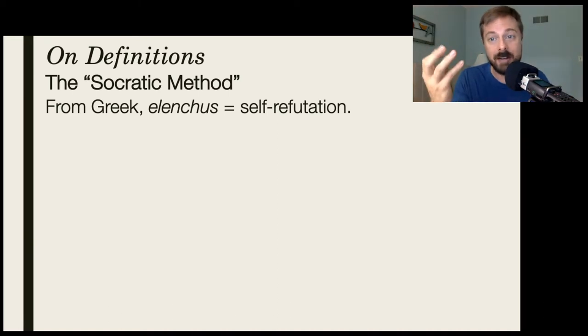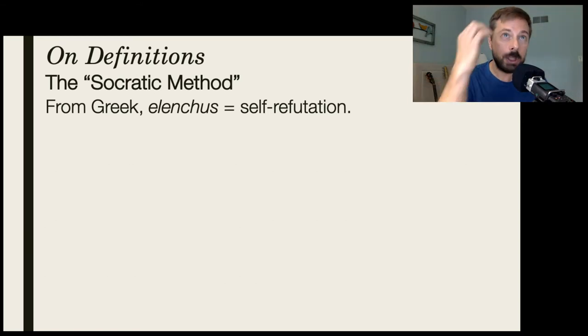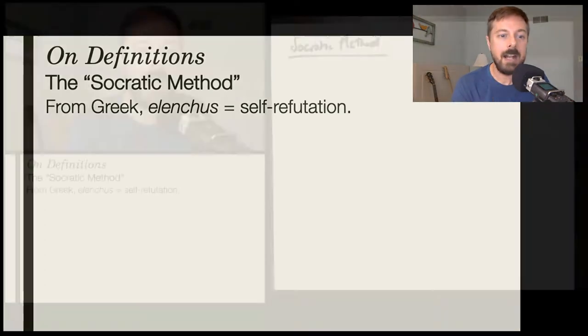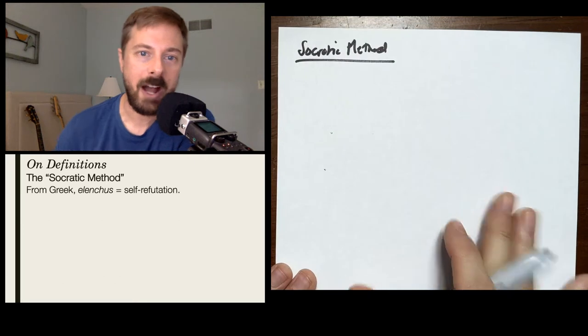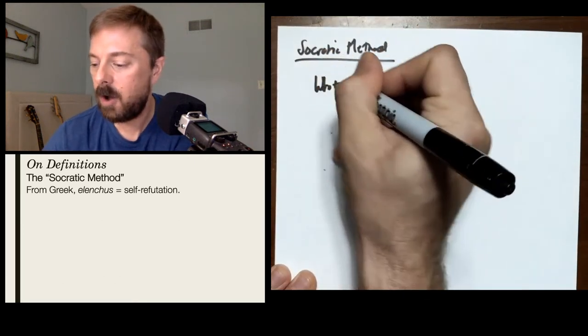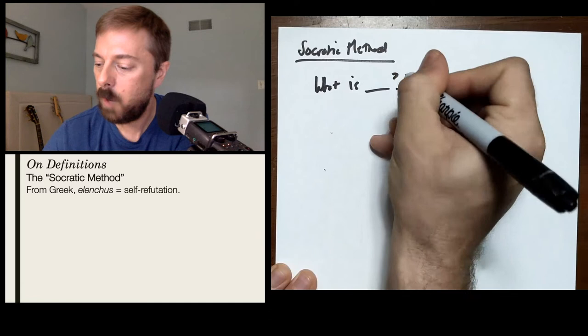So the Socratic method in Greek is the elenchus. And it's a kind of self-refutation. It's where Socrates leads you to reflect critically on your own beliefs about a thing and try to arrive at what's fundamentally true by analyzing your own beliefs. In particular, remember, what does Socrates do? He asks this 'what is' question, which is fundamentally asking not just what you mean by a word, but what a thing is.